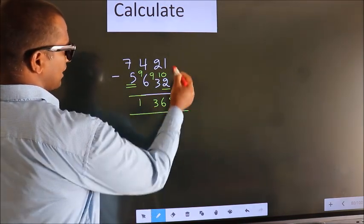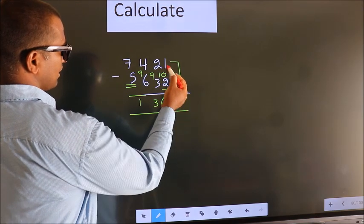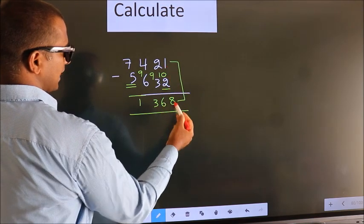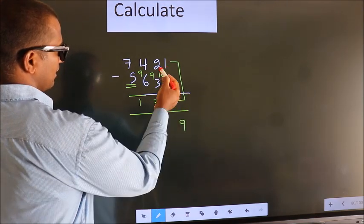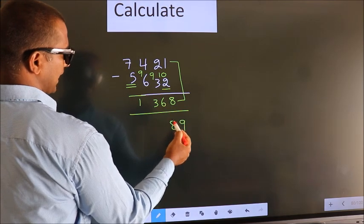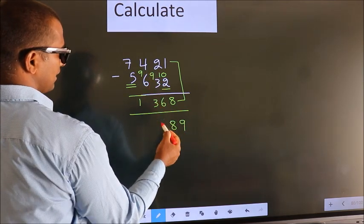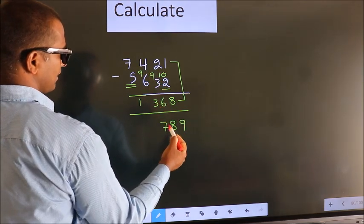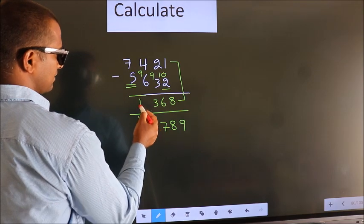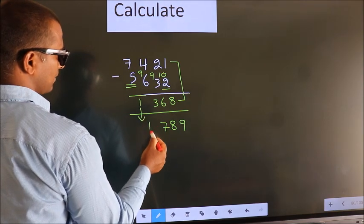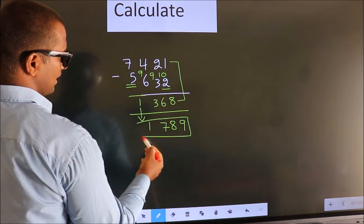Now add these two. 1 plus 8 is 9, 2 plus 6 is 8, 4 plus 3 is 7. The first digit we write as it is. So this is our answer.